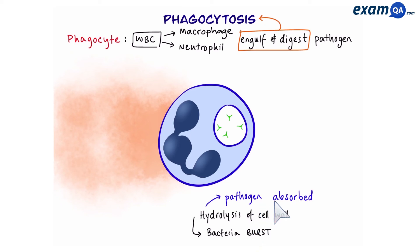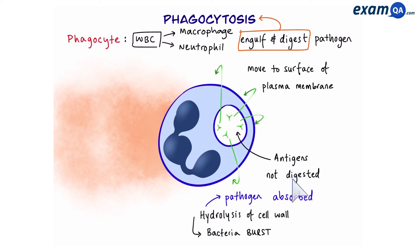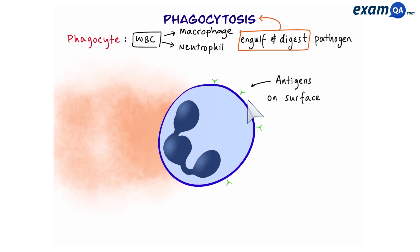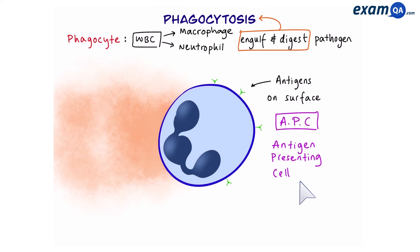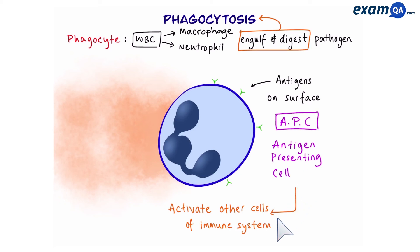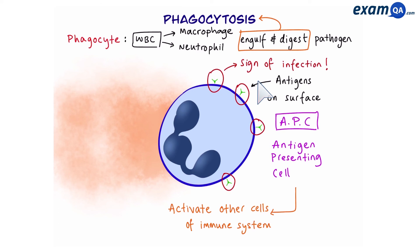The material from the pathogen is then absorbed by the white blood cell. Notice however that antigens are not digested — these antigens move to the surface of the cell. What we now have is an APC, or antigen presenting cell. The APC will activate other cells of the immune system, such as T cells, using the antigens on its surface to signal that the body is under infection.